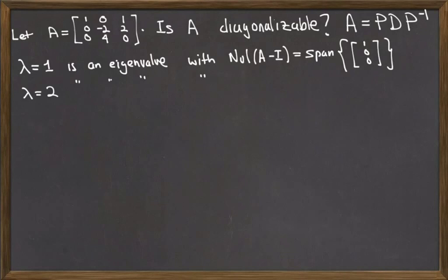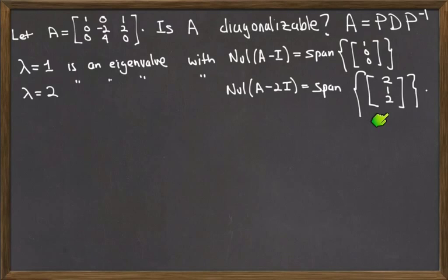Lambda equal to 2 was also an eigenvalue. Its null space was also one-dimensional, and it was spanned by the vector [2, 1, 2]. So this is an eigenvector corresponding to lambda equal to 2.